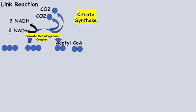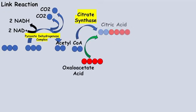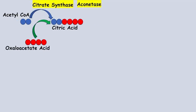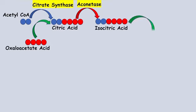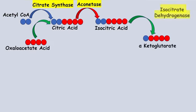In the Krebs cycle, the first enzyme to act is citrate synthase. It acts on acetyl CoA and combines it with oxaloacetate to form citric acid. After that, the next enzyme is aconitase, which acts on citric acid to form isocitric acid, an isomeric form of citric acid. Then isocitric acid is converted to alpha-ketoglutarate with the help of isocitrate dehydrogenase. There are six carbons in isocitric acid but only five carbons in alpha-ketoglutarate.